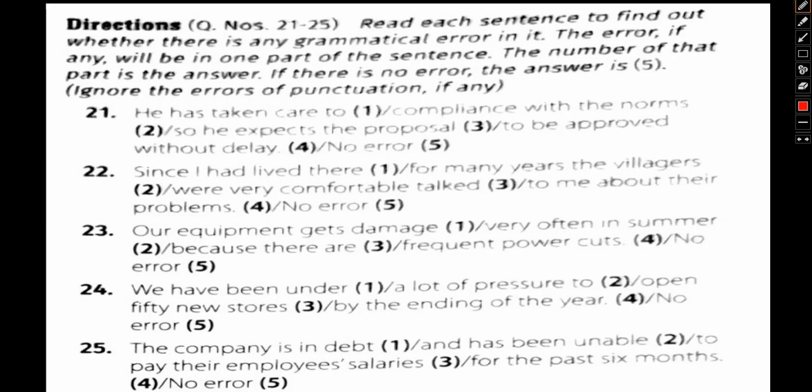This is the instruction pertaining to the way we can go about solving the same. Let's focus on question number 21: He has taken care to (1), compliance with the norms (2), so he expects the proposal (3) to be approved without delay (4), and no error (5).